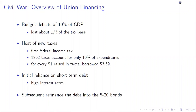Good evening. I'm George Hall, and this is lecture 12 of Fiscal History of the United States. This evening I want to discuss the funding of the Union efforts during the U.S. Civil War, which was fought from 1861 to 1865.